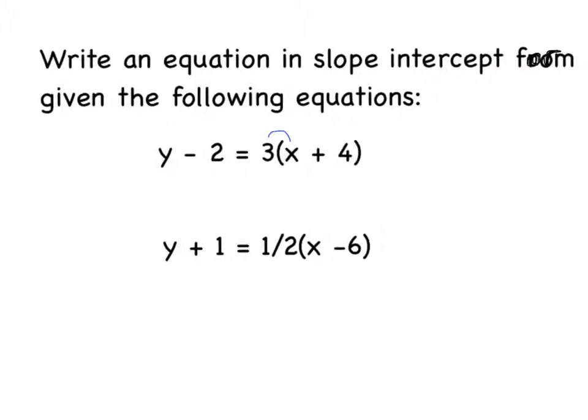First, we need to use the distributive property to get rid of the parentheses. So 3 times x is 3x, 3 times 4 is 12, and we'll rewrite the rest of the equation. We need y by itself to be in slope-intercept form, so I'm going to add 2 to both sides to get y equals 3x plus 14.